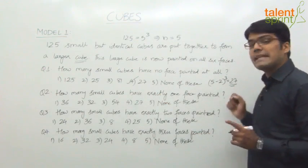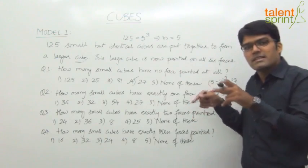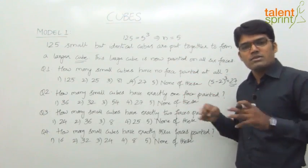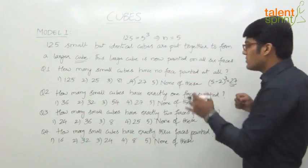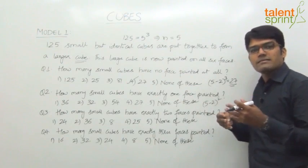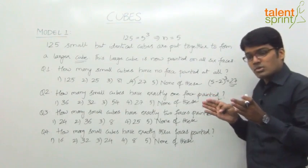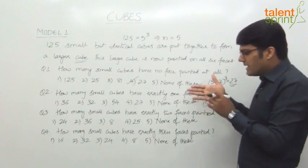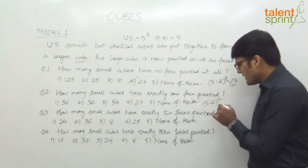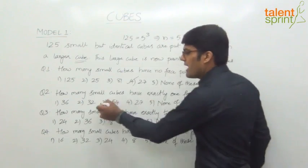How many small cubes have exactly one face painted? Cubes with one face painted exist on the faces of the larger cube, but we don't consider the extreme ones — only those between them. Total size is 5, subtract 2 (one from each side), giving N−2 = 3. Each face has a 3×3 arrangement, so 9 cubes per face. With 6 faces, the formula is (N−2)² × 6 = 9 × 6 = 54. The answer for Question 2 is option 3: 54.